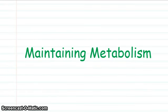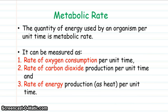Hello everyone. Next part of Higher Unit 2, metabolism and survival — we're looking at maintaining metabolism. Metabolic rate is just the quantity of energy used by an organism per unit time, and can be measured by rate of oxygen consumption, carbon dioxide production, or energy production.